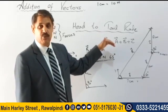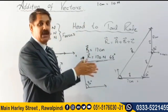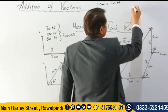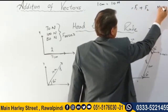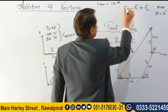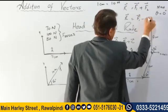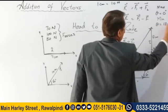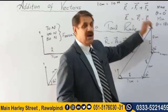The range of the resultant for two vectors F1 and F2 is: maximum is F1 plus F2, which occurs when the angle theta is 0 degrees; minimum is F1 minus F2, which occurs when the angle is 180 degrees. Any answer between these two values is possible.